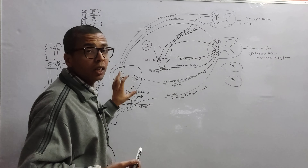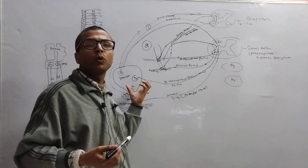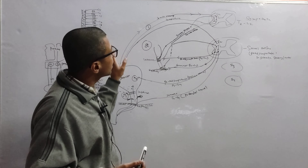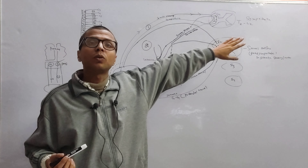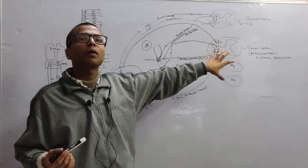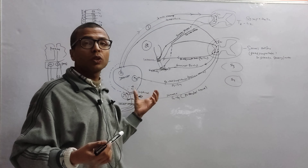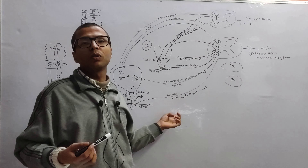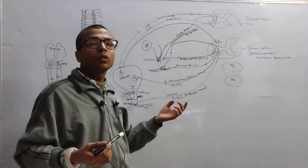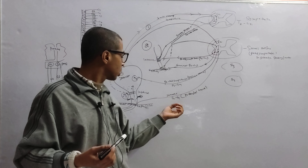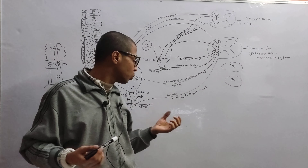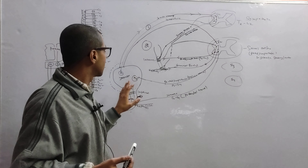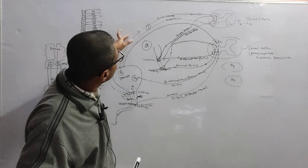Let's get oriented to this picture. Here is the urinary bladder, here is the internal sphincter, and here is the external sphincter. This external sphincter is made by pelvic floor muscles. Here I have drawn the rectum and anal canal. This is the internal sphincter of the anus and this is the external sphincter of the anus, also made by pelvic floor muscles. The same pelvic floor muscles make the external sphincter of both the urethra and anus.